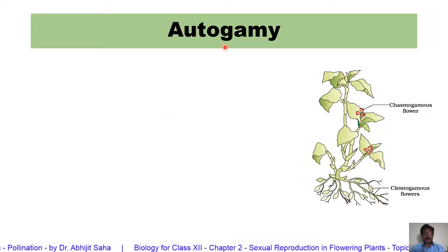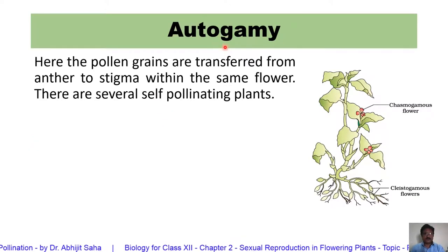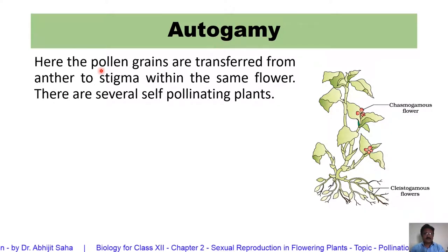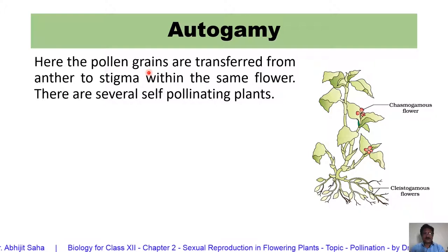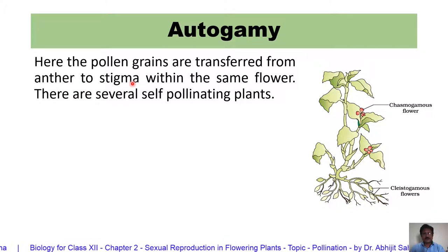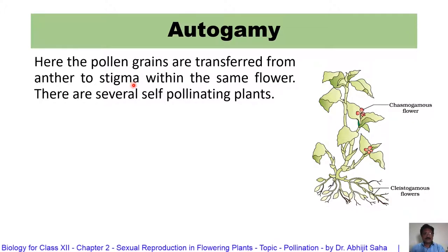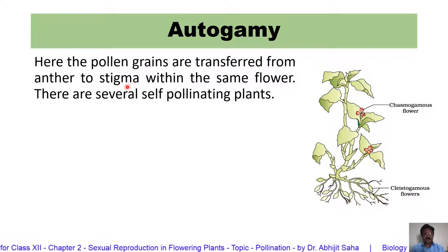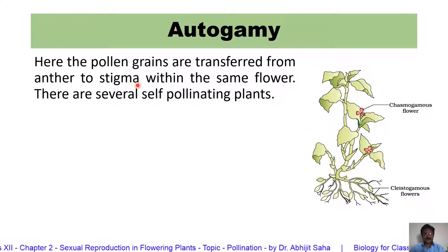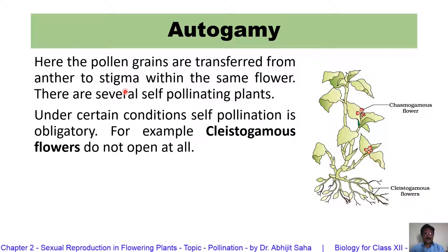Let us start with autogamy. Auto means self. The pollen grains are transferred from the anther to the stigma of the same flower. Naturally, these flowers are bisexual — both the stamens and the pistils are present.